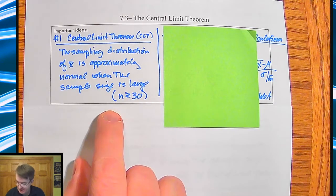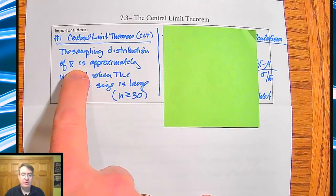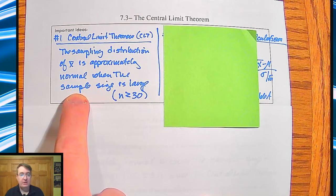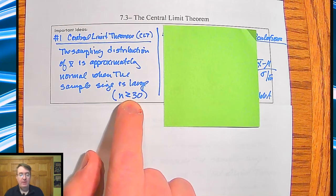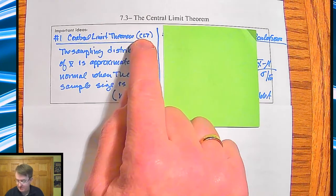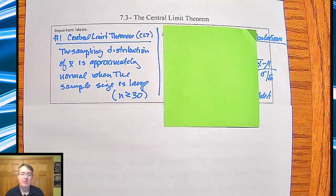The central limit theorem says that the sampling distribution of x-bar is approximately normal when your sample size is large, and large being defined as 30 or more. You can abbreviate this CLT for central limit theorem. We're mathematicians. We've got abbreviations for everything.